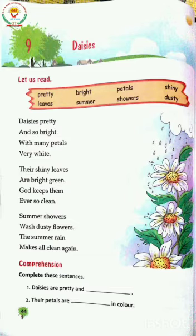Hello students, today we will read chapter 9 of English and the chapter name is Daisies. This is a poem and its name is Daisies on page number 44.